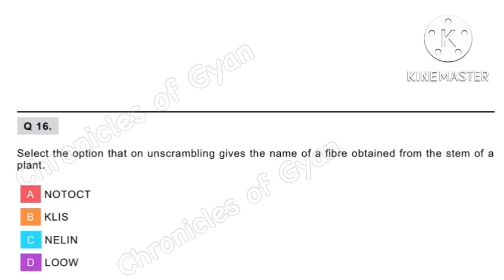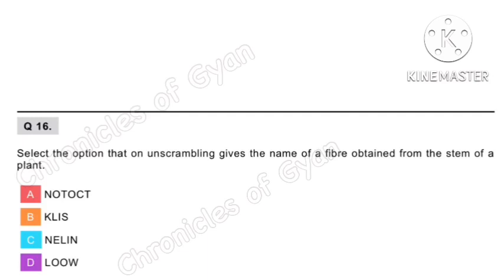Question 16. Select the option that on unscrambling gives the name of a fiber obtained from the stem of a plant. Option A is cotton, obtained from the seed of a plant. Silk is an animal product obtained from the silk moth. Option C, linen fiber is obtained from the flax plant and is present inside the stem of the flax plant. Wool is an animal product obtained from sheep. So the correct answer is option C, linen.